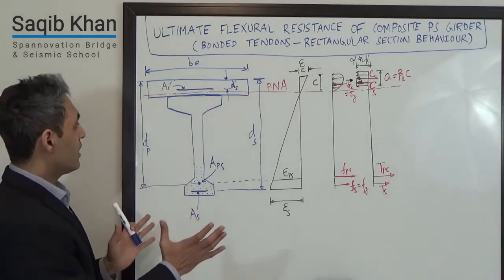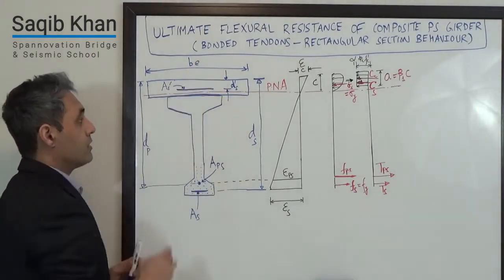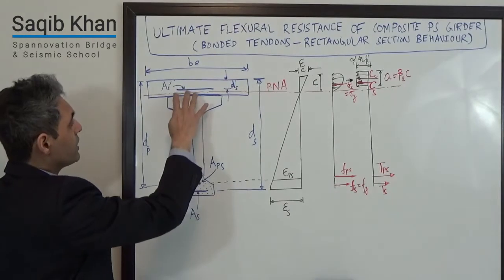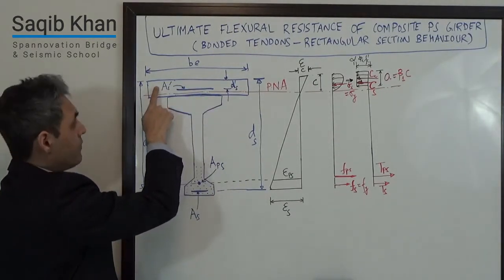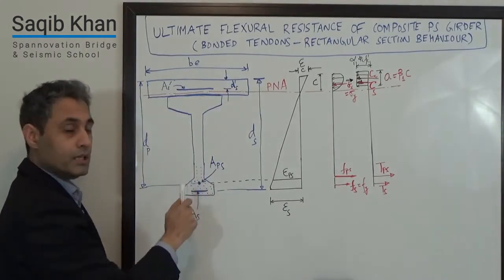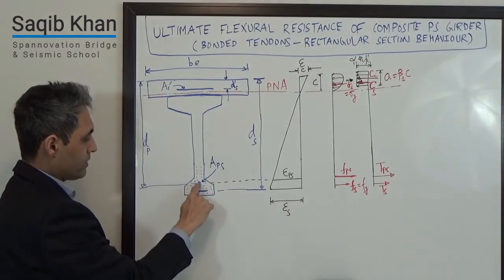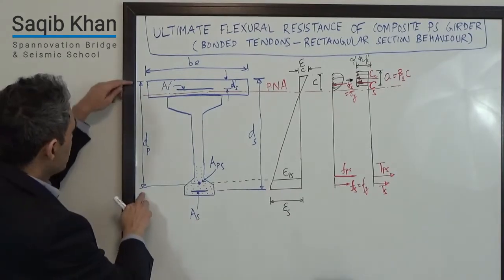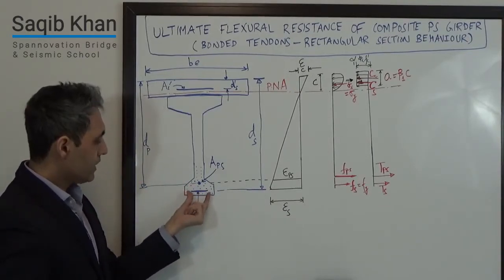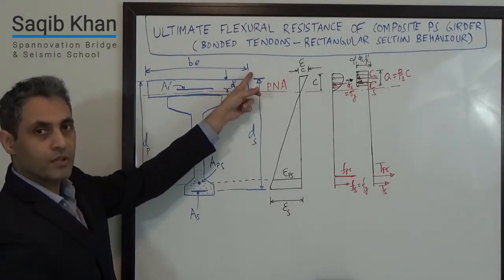This is a composite section. The codes give us the effective width of the deck, BE, which has to be accounted for in our composite section. You have this I-girder sitting underneath. The deck will have some rebar — I've assumed it to be lumped at a point with a total area of A'S and a distance D'S from the top fiber of the deck. There will be a number of tendons down here, assuming this is a positive zone. I have lumped the total area as APS, with its centroid at a distance DP from the top of the deck. There will also be some distributed rebar at the bottom, lumped as AS, with its distance to the top of the concrete deck denoted DS.